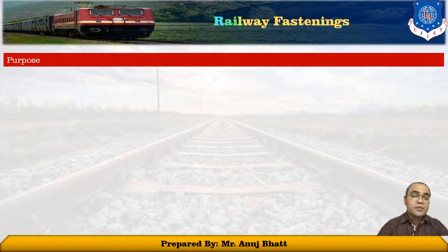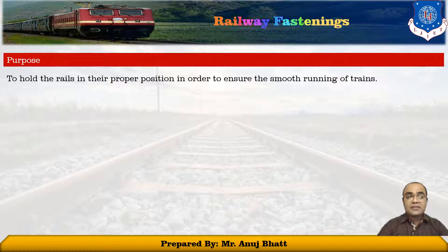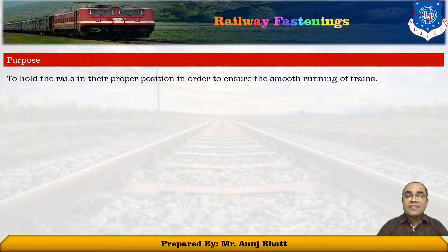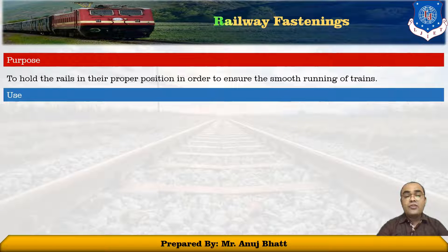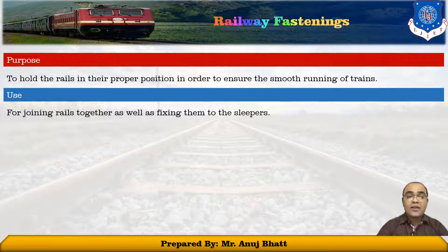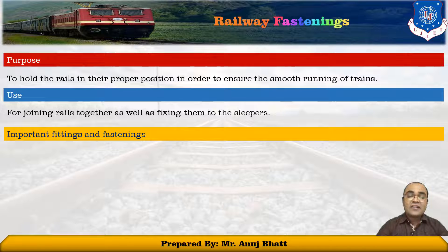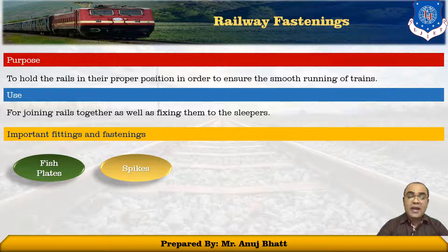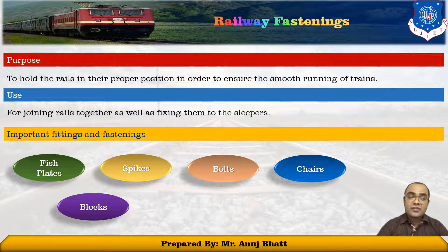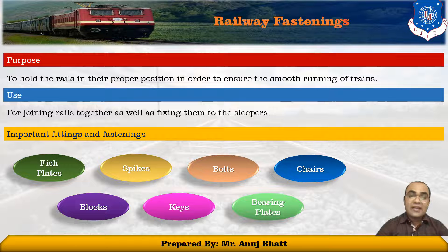The first purpose of providing these railway fittings is to hold the rails in their proper position, to ensure the smooth running of the rails. The fastenings ensure that the rails and sleepers hold each other properly. The use of these fastenings is for joining the rails together as well as fixing them to the sleepers. Some important fittings and fastenings used in railways are fish plates, spikes, bolts, chairs, blocks, keys, and bearing plates.